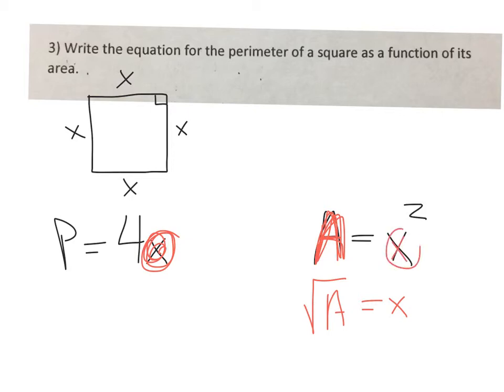So we solve for x over here so that we can replace x over there. We have a perimeter equation and we have an area equation, and they both have an x in them.